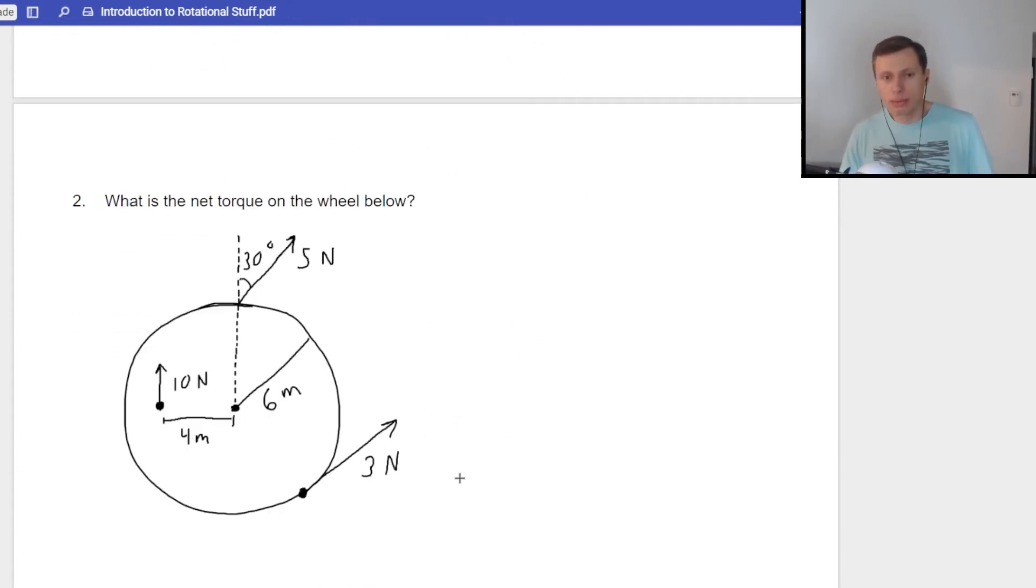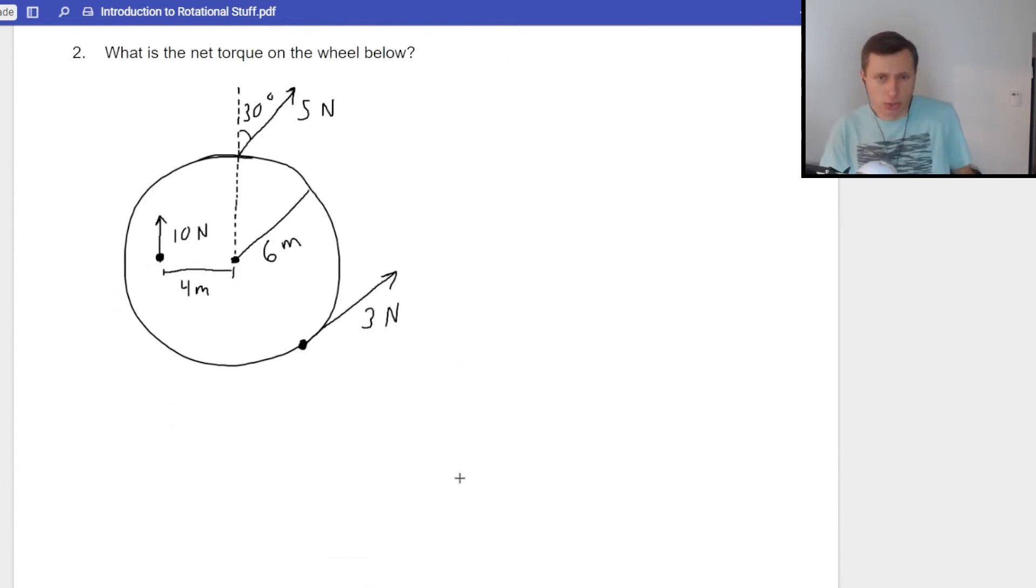Now, there's one more torque problem we want to look at here. This one, it just looks more complicated, so let's talk about it. What is the net torque on the wheel below? Let's start with the top one. It's the hardest. 5 Newtons at a 30 degree angle like this. So, once again, I don't know if it's sine or cosine just yet, but I do know this. If I were to draw my components, a red component going up and a blue component going to the right, and there's my right angle, this is a right triangle, the component I care about, is it the red or is it the blue?